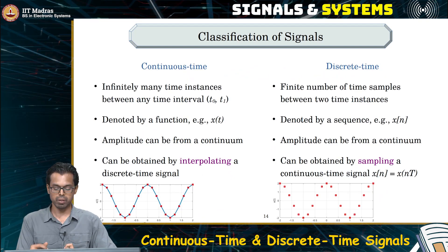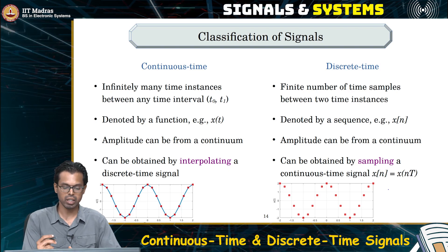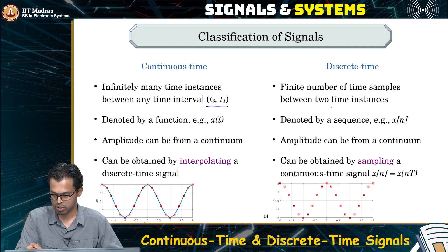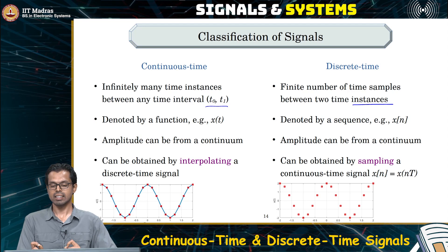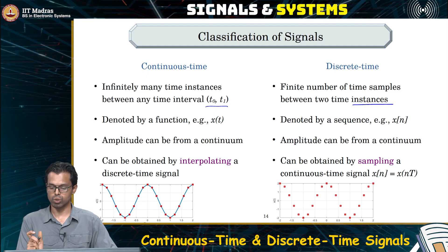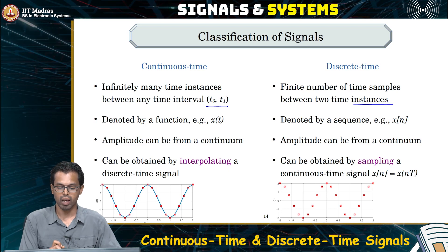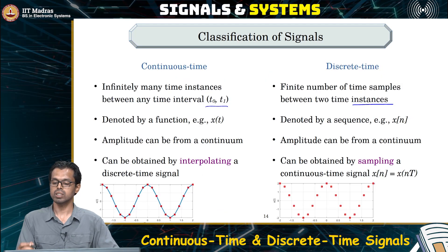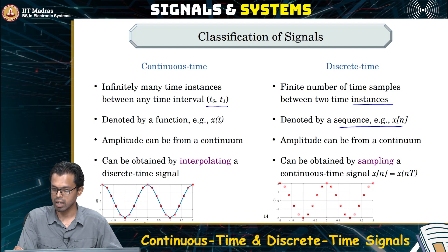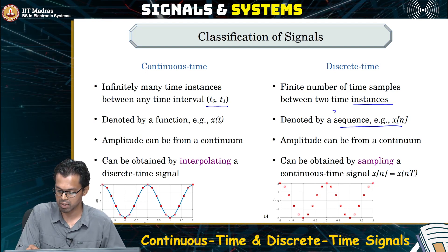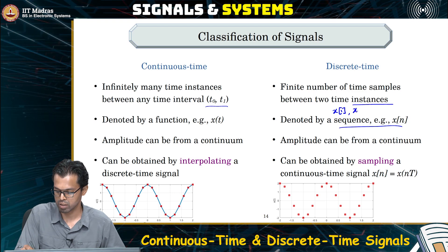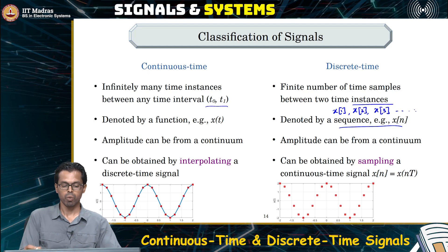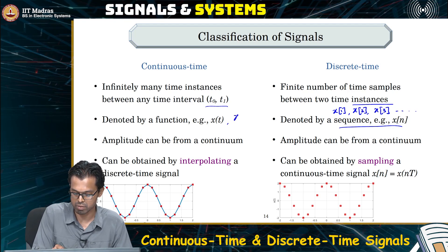These are the main differences between a continuous time and a discrete time signal. Given an interval for a continuous time signal, there are infinitely many points. But given two time instances for a discrete time signal, you can exactly say how many points exist. Because it is a sequence of numbers, we denote a discrete time signal as a sequence: x(1), x(2), x(3), and so on.